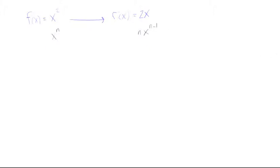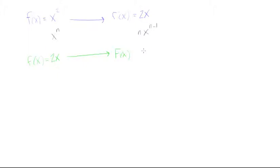The antiderivative basically means we're going backwards. We're going to start with 2x and find what we had to differentiate to get that. So now f(x) = 2x, and we want to find the original function — assuming this is f'(x), we're finding what the original f(x) was. This is called the antiderivative.